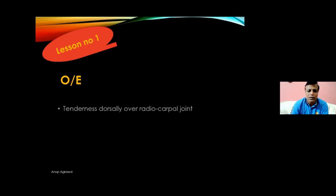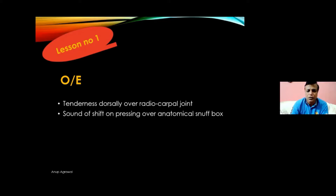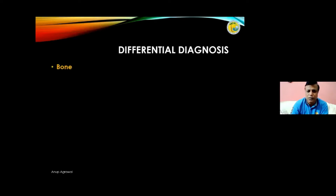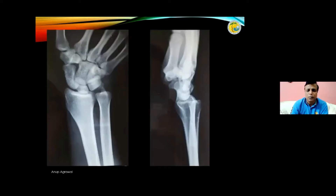What actually went wrong was that proper examination was not done. Proper examination is very important in any case. On examination, what I found was there was tenderness dorsally over the radiocarpal joint and a slight sound of shift on pressing over the anatomical snuffbox. So I knew there was something wrong with the scaphoid. I came up with differential diagnoses: fracture, subluxation, avascular necrosis of the scaphoid, ligament tear, or tendinopathy.